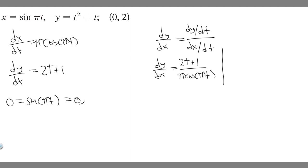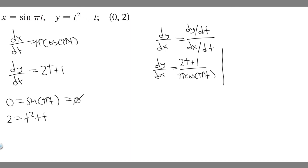We want to check that t = 0 also gives y = 2. Plugging into y = t² + t: 0² + 0 = 0, which is not 2, so t = 0 doesn't work. What would work? If we plug in t = 1: 1² + 1 = 2. ✓ And checking x: sin(π·1) = sin(π) = 0. ✓ So t = 1 checks out for both equations. Make sure you always verify t in both equations, because t = 0 worked for x but not for y.